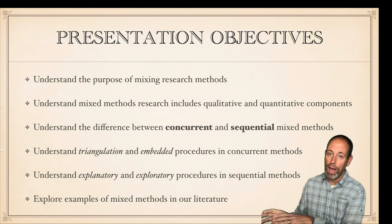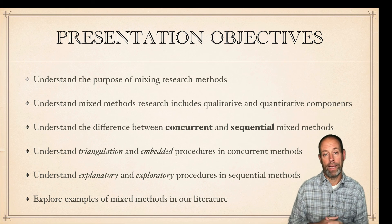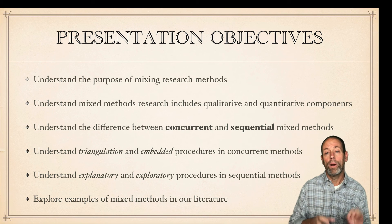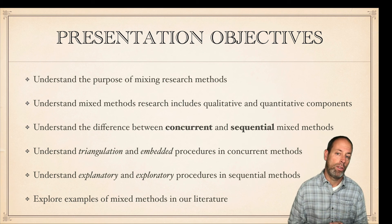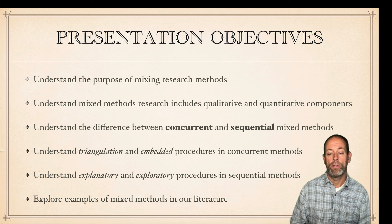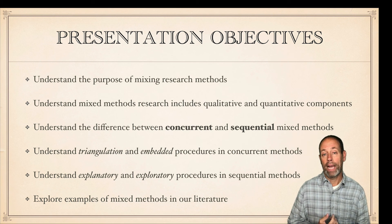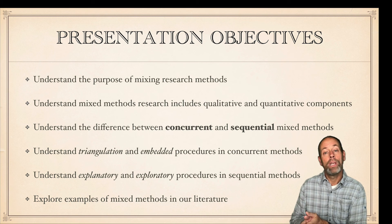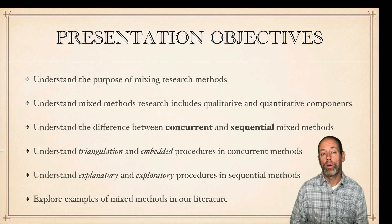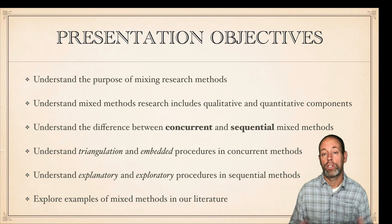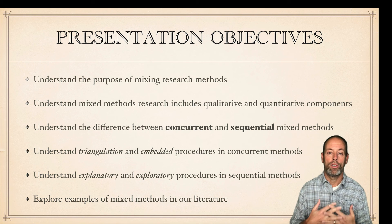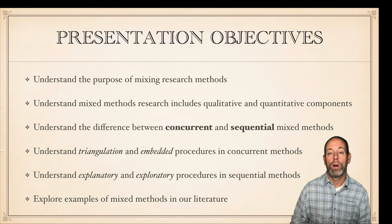Basically, it involves whether we do one type of data collection first and then the other, or if they are intermingled during the length of the study. Within concurrent methods, researchers will use a triangulation method or an embedded method to mix these two methodologies, each providing different advantages and disadvantages. In sequential, there are two subcategories — explanatory and exploratory — where you utilize one method to first see what's out there and then dive in using a different methodology. We'll also look at examples from the literature that have utilized mixed methods to show the strengths of combining these two research designs.